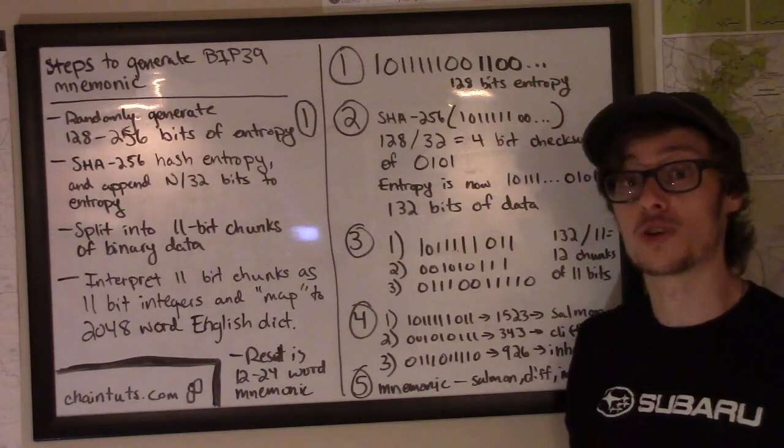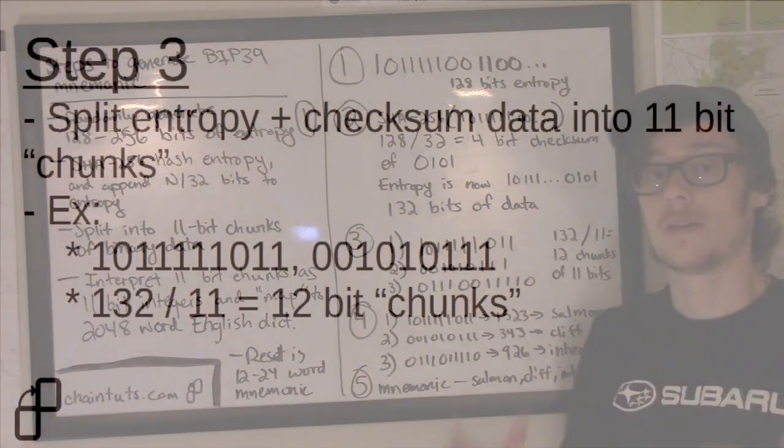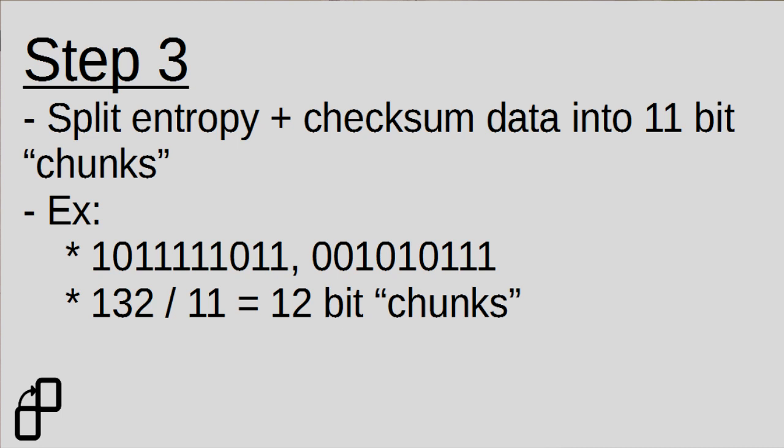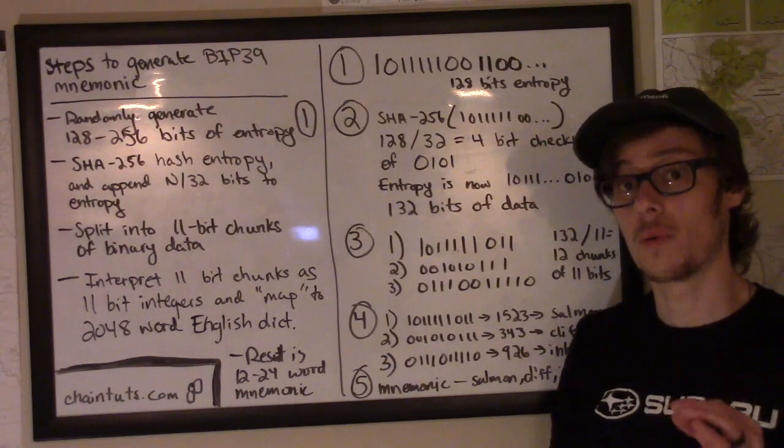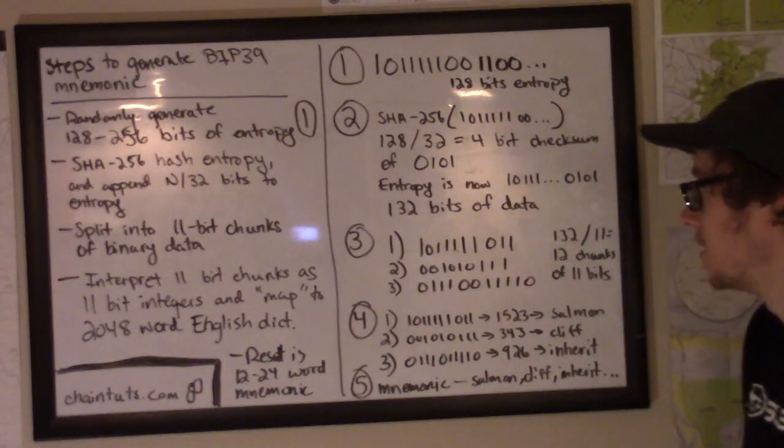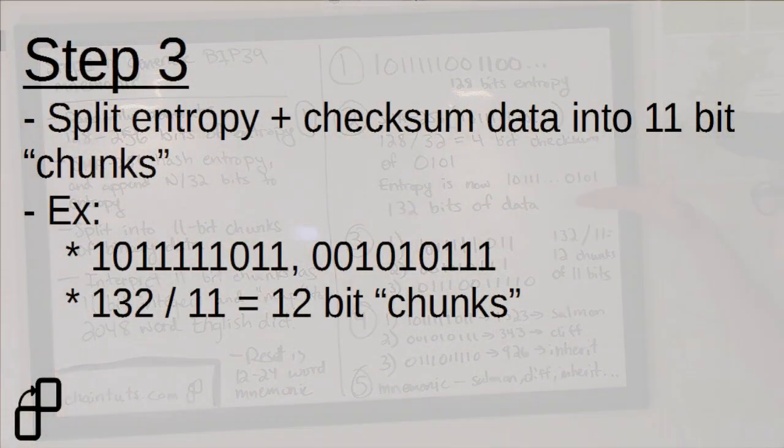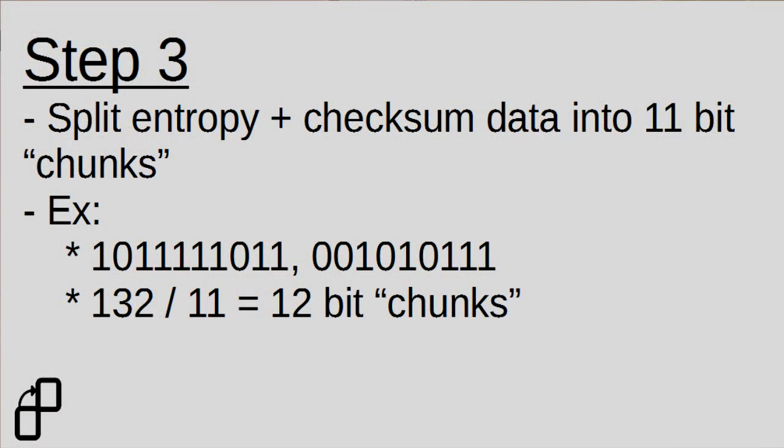The next step is to split our total entropy into chunks of 11 bits each. This 11 bits is specified by the BIP39 protocol and the size of these chunks is the same no matter how big of a seed you're generating from 12 to 24 words. You're always going to split up your checksum entropy into 11 bits. So for example, in this case, we'll split it up into 12 chunks of 11 bits since 132 bits of checksum entropy is divided by 11.